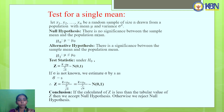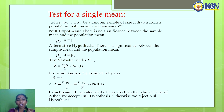Test for single mean: Let x₁, x₂, …, xₙ be a random sample of size n drawn from a population with mean μ and variance σ². The null hypothesis is that there is no significant difference between the sample mean and population mean, written as H₀: μ = μ₀. The alternative hypothesis is that there is a significant difference. The test statistic is Z = (x̄ − μ₀) / (σ/√n), which follows standard normal distribution.